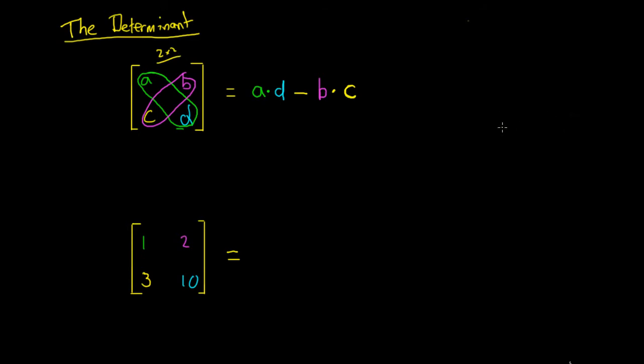So say we wanted to calculate the determinant down here. We've got this example where we have a matrix which has the numbers 1, 2, 3, and 10. So what you can see is that the numbers here are color coded so they correspond to the above matrix. So we said it was going to be a times d minus b times c, or green multiplied by blue minus purple multiplied by yellow.